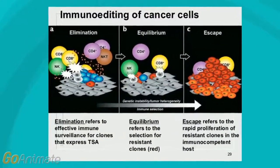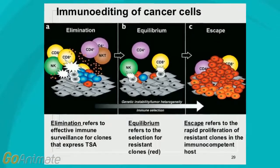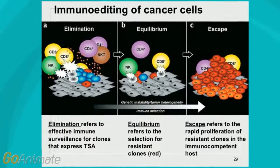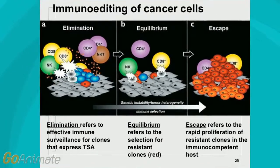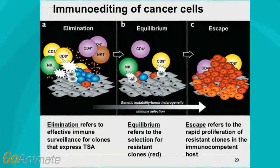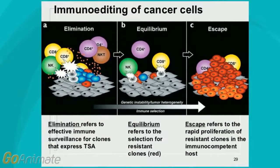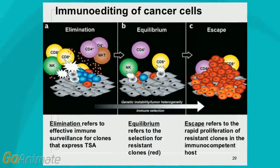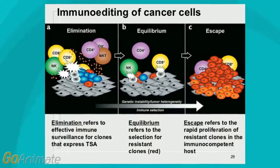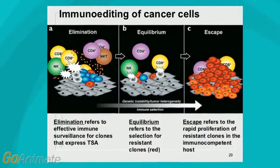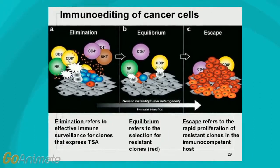This is achievable through a concept known as immuno-editing, in which there are three stages defined as the three E's: elimination, equilibrium, and escape. We will explore these stages now. To help define immuno-editing, we will use an analogy of cops and robbers.